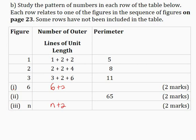The final term in the number pattern is given by the figure number multiplied by 2. So 1 multiplied by 2 is 2, 2 multiplied by 2 is 4, 3 multiplied by 2 is 6, 6 multiplied by 2 is 12, and n multiplied by 2 is 2n.